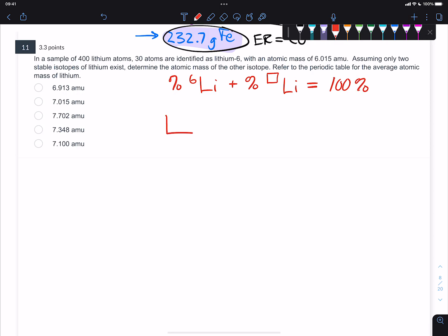So I will say percent for the lithium-6, and don't forget that you also need to figure out the percent abundance for the other lithium isotope because we know they've got to equal 100%. You're not given any percents, but you actually are given that there are 400 lithium atoms in this sample and 30 of them are the lithium-6 isotope.